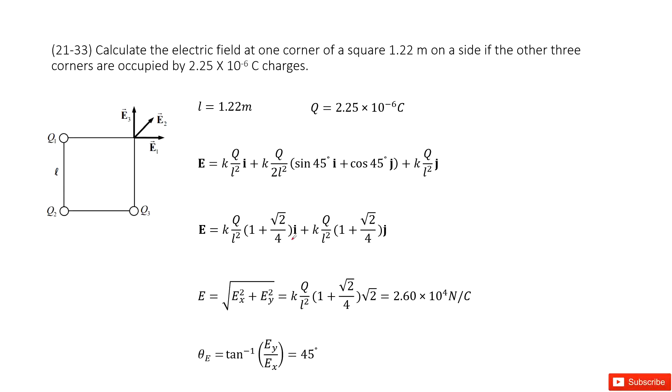We do the calculation and get the answer. The i-component plus the i-component, j-component plus the j-component. For this E, the x-component equals the y-component. We can find the electric field magnitude as √(Ex² + Ey²).